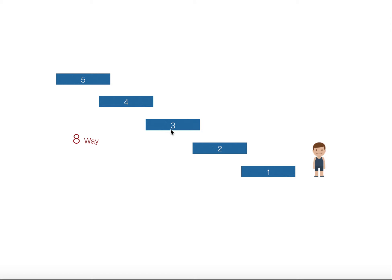Let's put these numbers in a series and see if there's a pattern. To get eight we add three plus five; to get five we add two plus three; to get three we add one plus two. This series is nothing but a Fibonacci series — the golden ratio, a secret of nature.